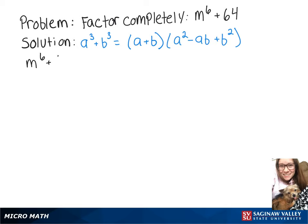We're going to rewrite m^6 + 64 as m² to the third power plus 4 to the third power.